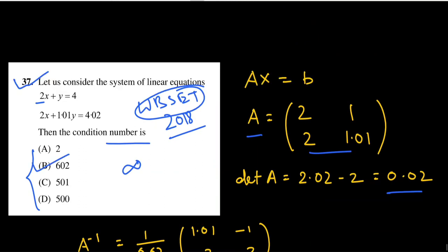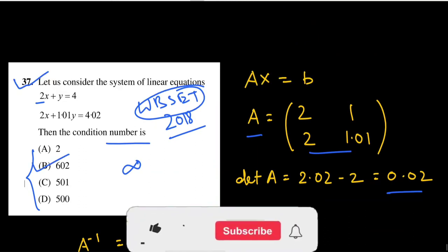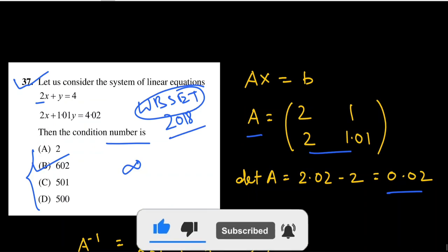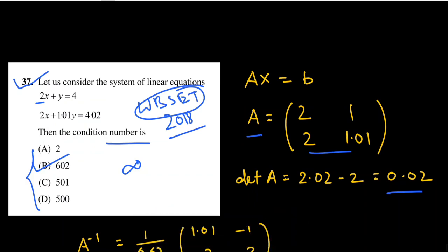So 602 is the correct answer — the condition number for this matrix is 602. If the video was helpful, please give it a like, share with your friends, and don't forget to subscribe the channel. Thank you, see you again in the next video.